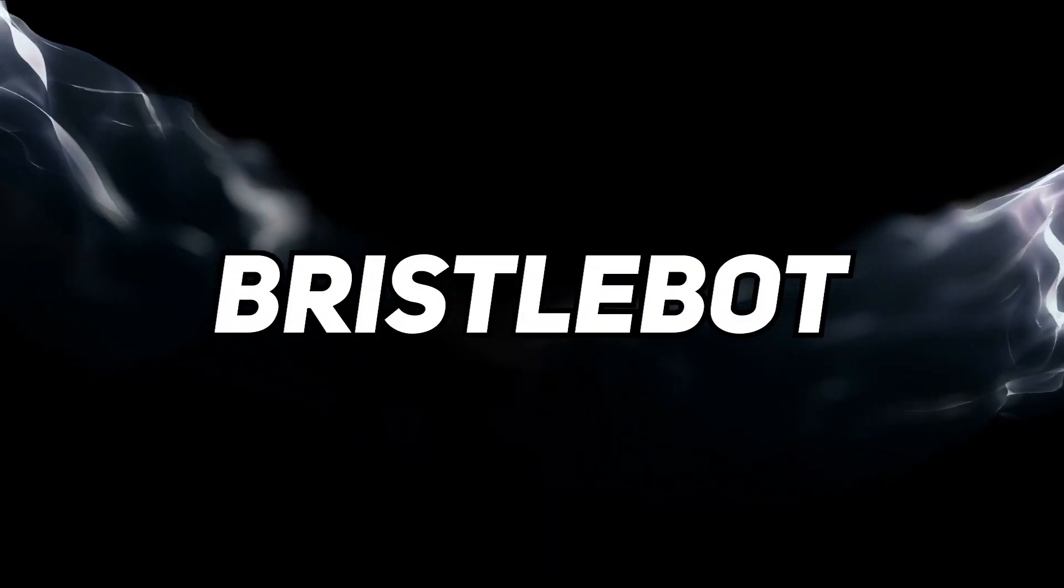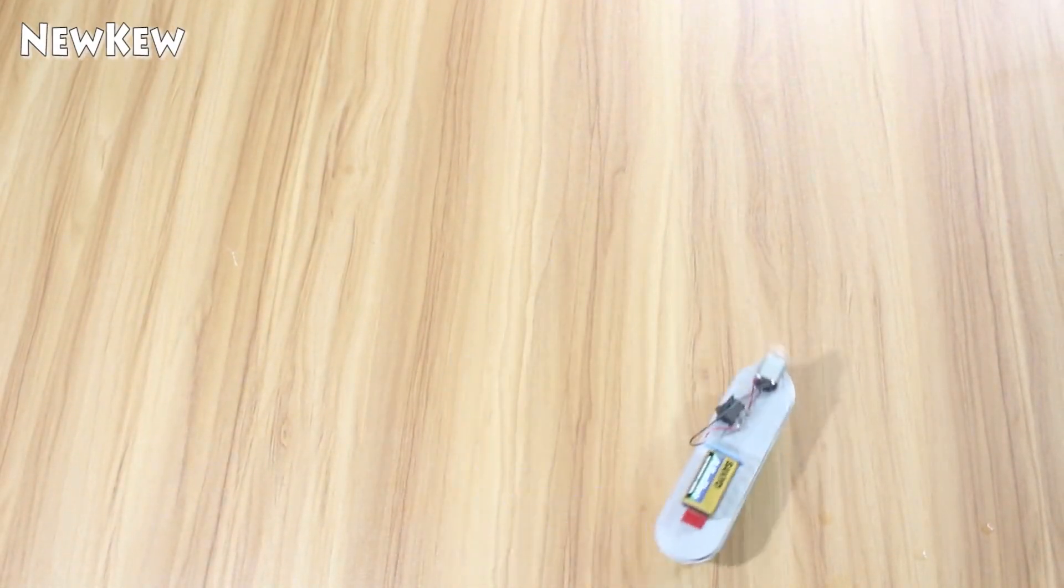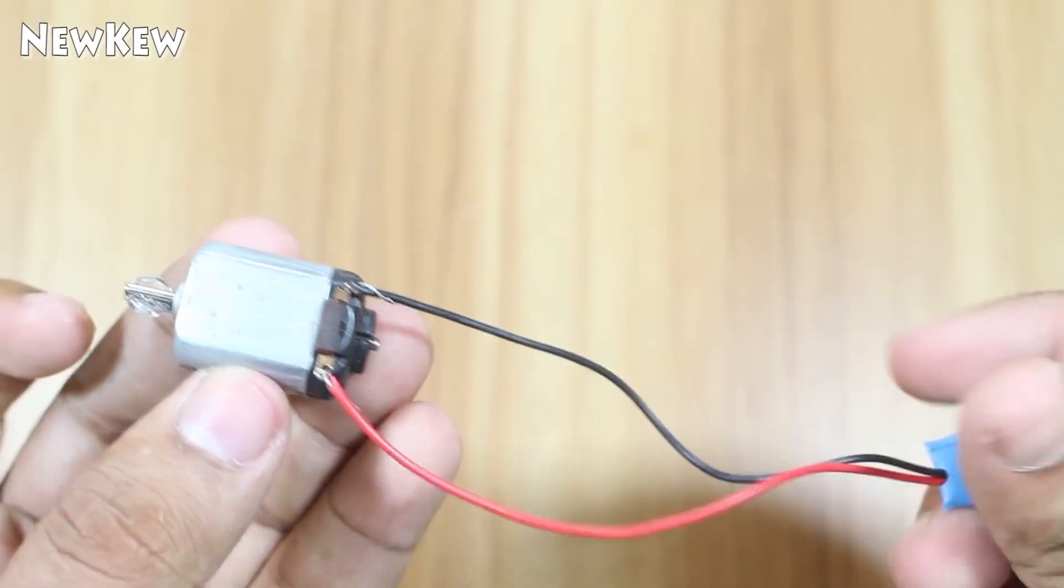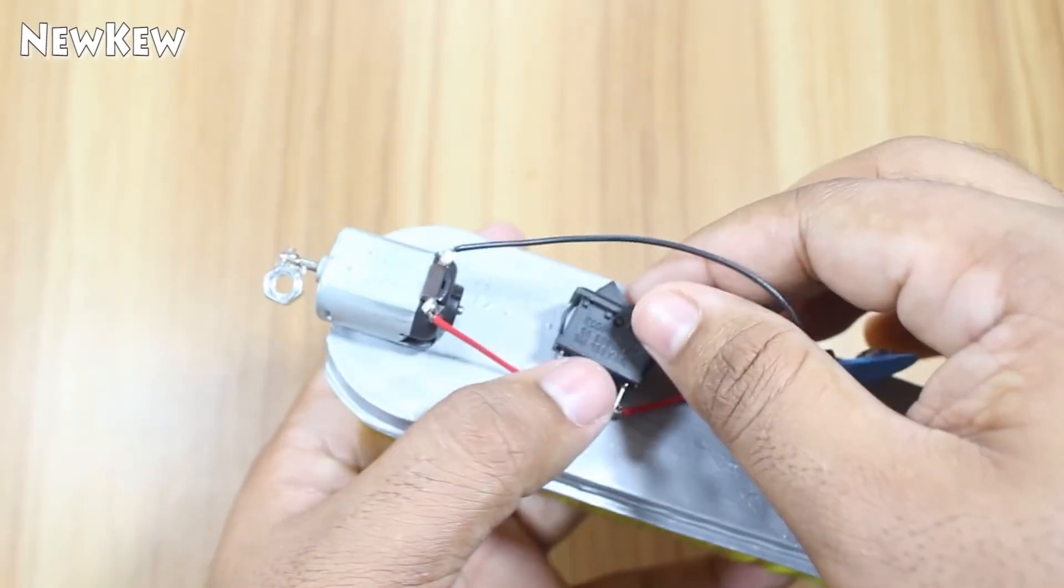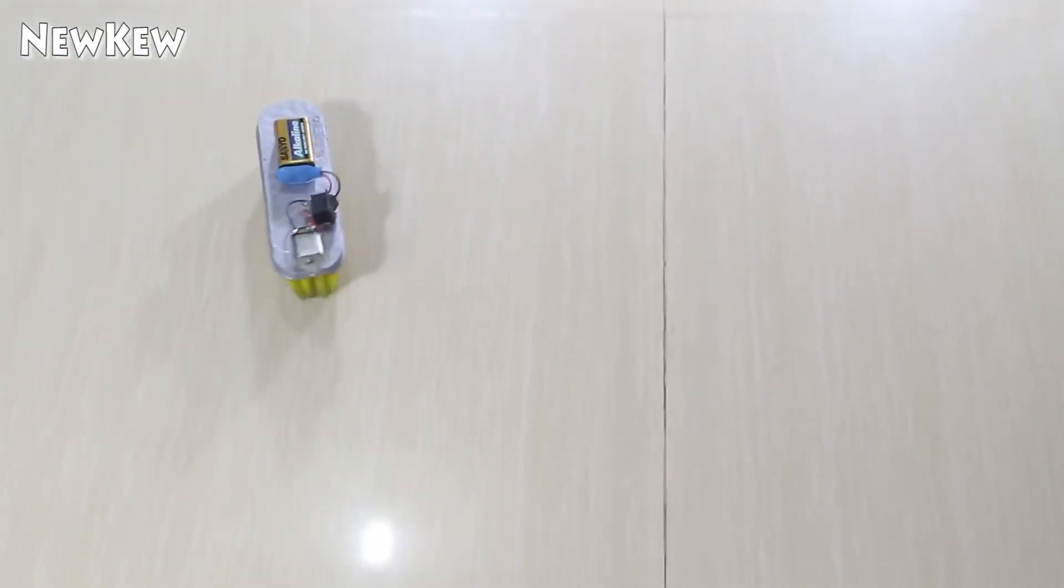Number three: BristleBot. The third project is a BristleBot which is a robot that can sense and avoid obstacles. You can make a BristleBot from a toothbrush head, a battery pack, two LEDs and a light sensor. You will also need some wires, a soldering iron and a glue gun for this project.